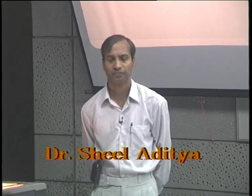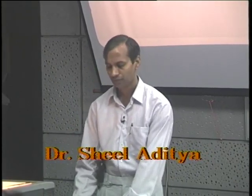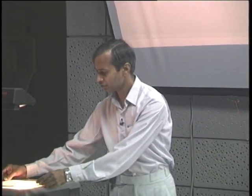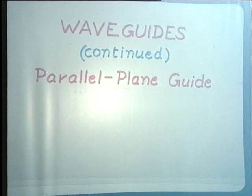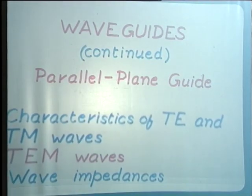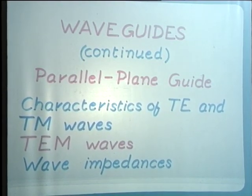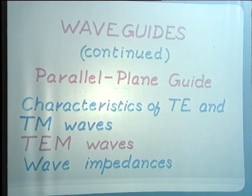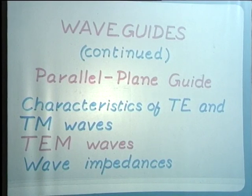Welcome to the 26th lecture in the course Engineering Electromagnetics. We have been discussing the parallel plane guide for the last few lectures. Today we consider the following topics: the characteristics of the transverse electric and transverse magnetic waves, then transverse electric and magnetic waves on the parallel plane guide, and the concept of wave impedance as it is applicable to various types of waveguides.